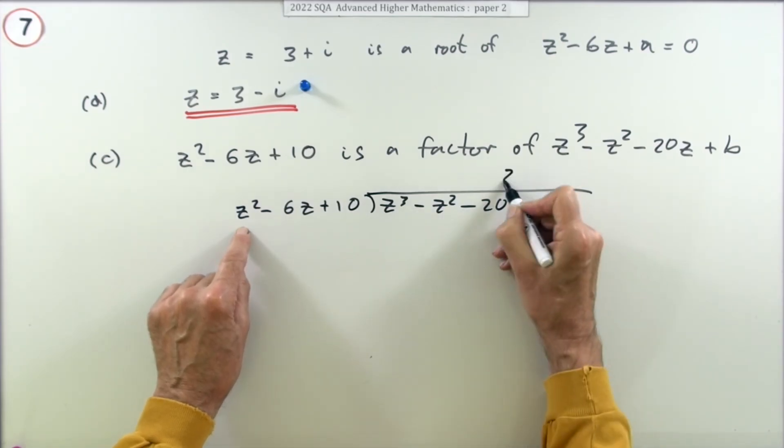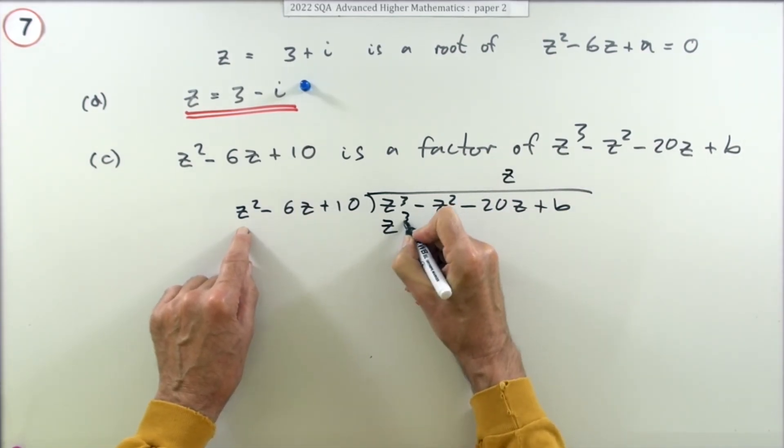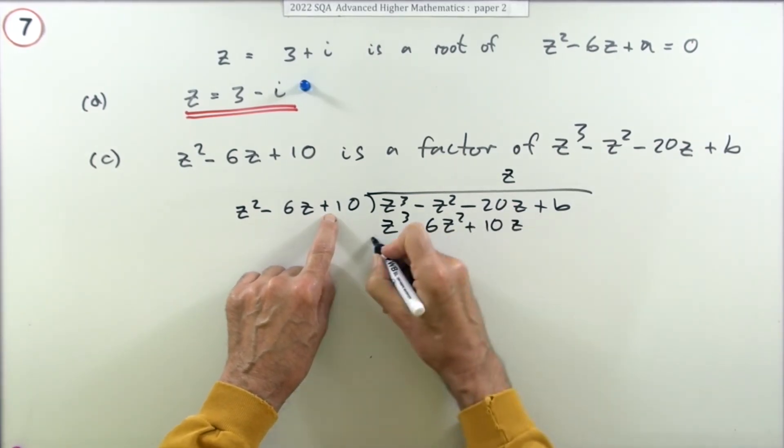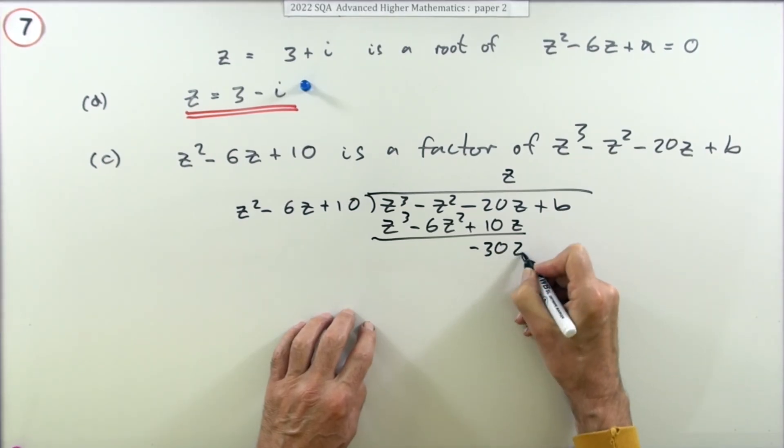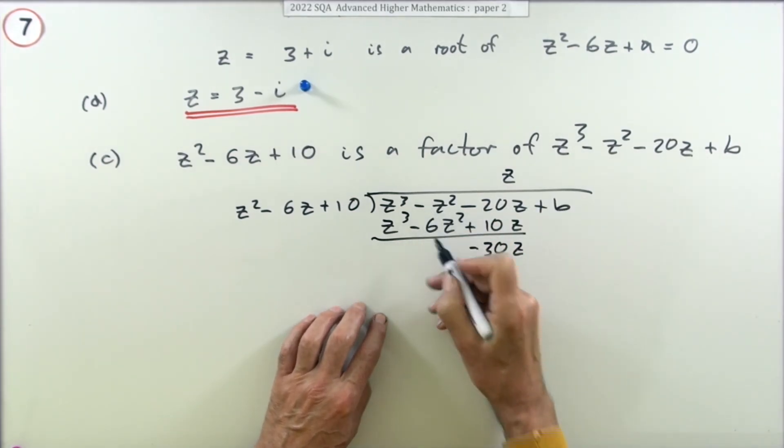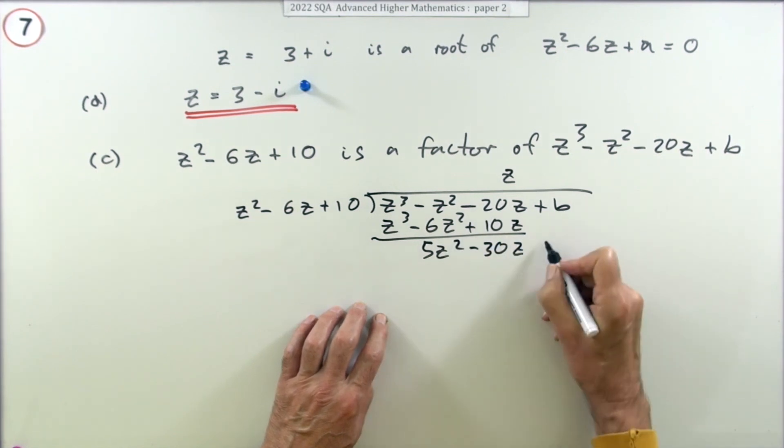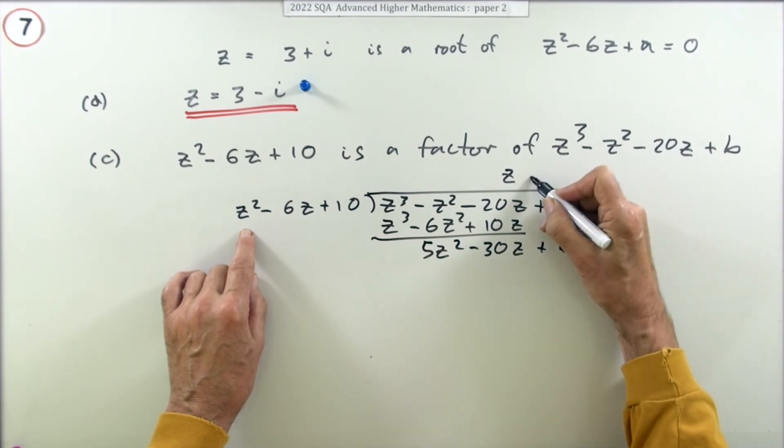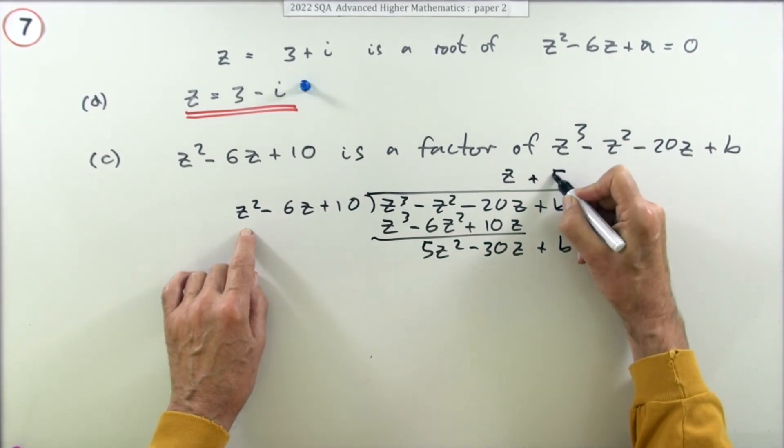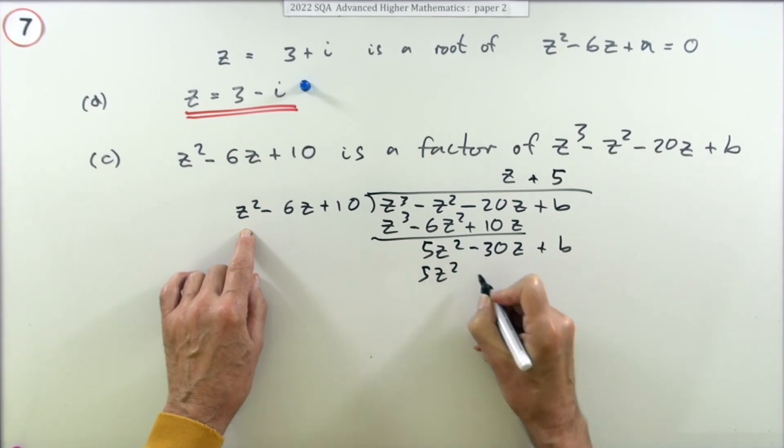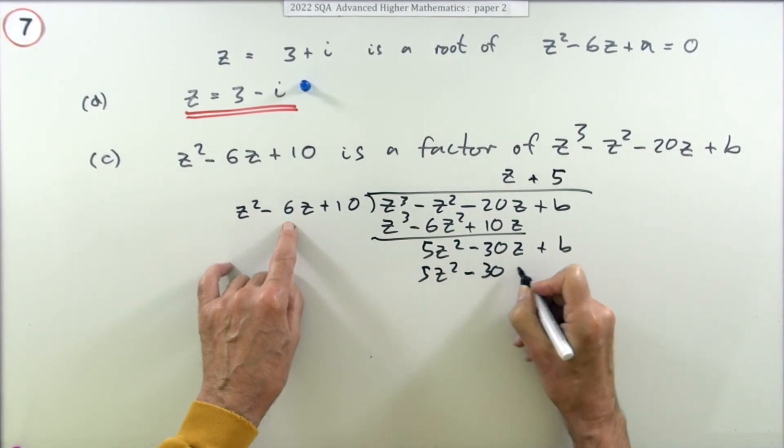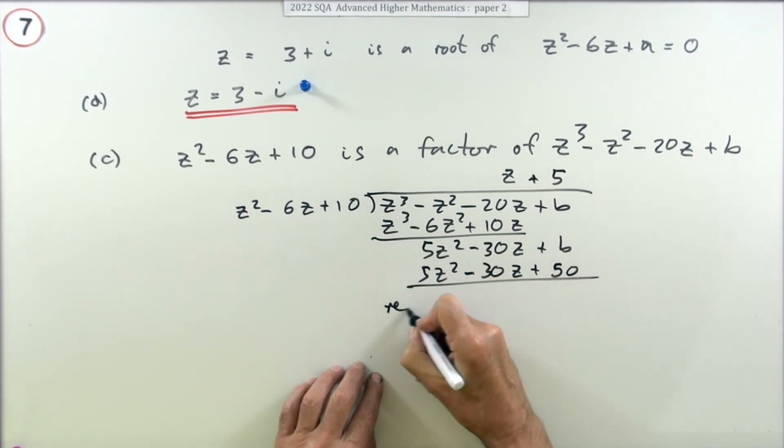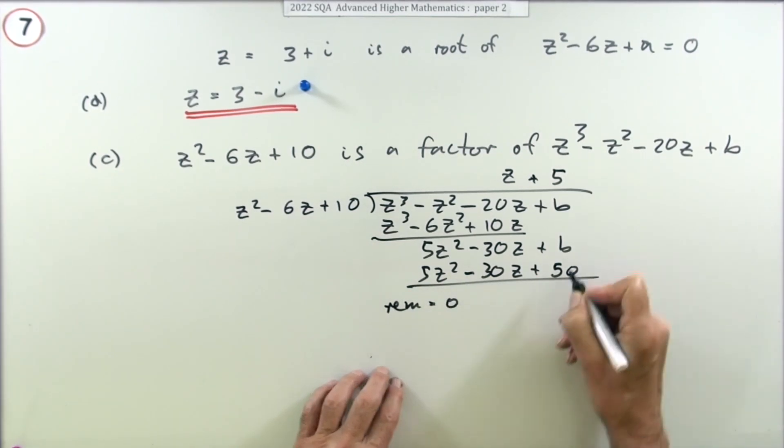Take that away, so that's minus 30z there. Minus 1 plus 6 is 5z squared. Bring down the b, then multiplying this by it'll have to be by a 5, you've got no option. So plus 5. So 5z squared minus 30z, it's all working, plus 50.